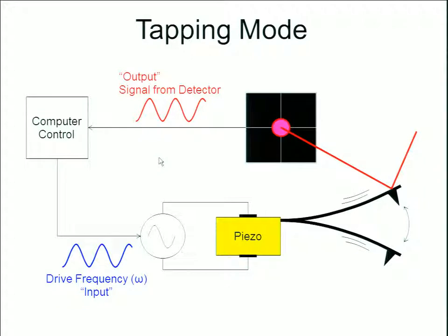What we look for is the difference between our drive frequency and what we actually see occurring on the cantilever — measured from the phase shift or amplitude change of the output signal. This phase shift or amplitude change occurs because the tip is now interacting with the sample and is no longer in free space.